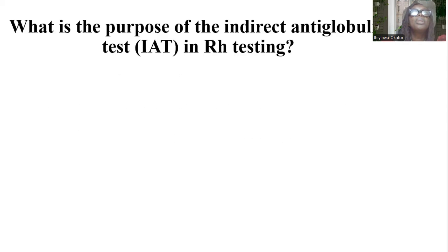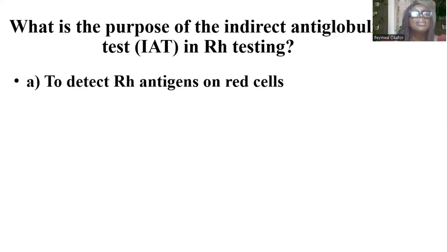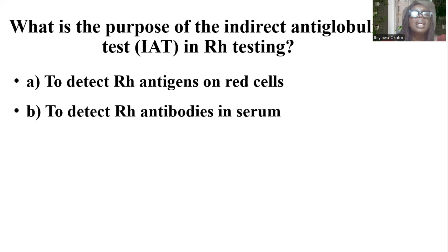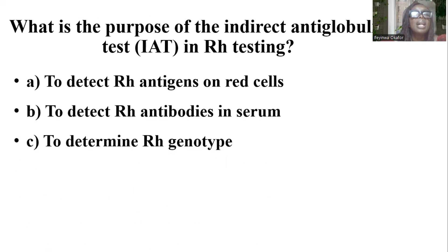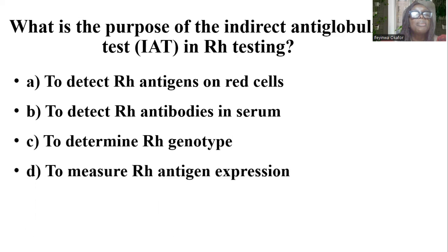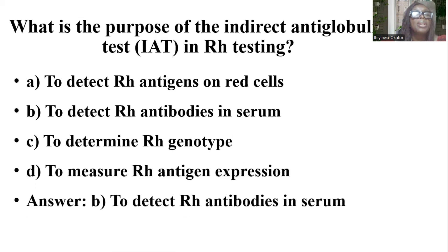What is the purpose of the indirect antiglobulin test in RH testing? Options include: to detect RH antigen on red cells; to detect RH antibodies in the serum; to detect RH genotypes; to measure RH antigen expression. And the answer is B — to detect RH antibodies in the serum.